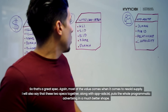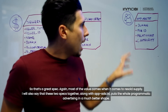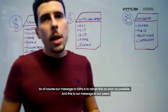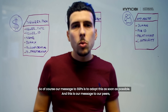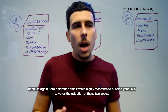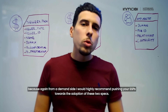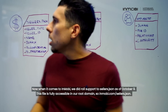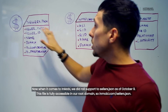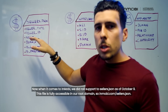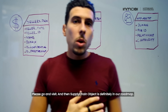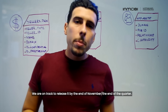These two specs together, along with app.ads.txt, put the world of programmatic advertising in a much better shape. Our message from an SSP is to adopt these specs as soon as possible, and there is a message to our peers as well. From a demand side, I would highly recommend pushing your SSPs towards the adoption of these two specs. When it comes to InMobi, we rolled out support for sellers.json as of October 9th, and this file is fully accessible at InMobi.com/sellers.json — please go and visit. Supply chain object is definitely in our roadmap, and we are on track to release it by end of November or the end of the quarter. That's it for today, thanks everybody.